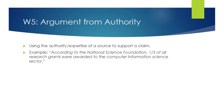W5 is the argument from authority — using authority or expertise to support a claim. For example: 'according to the National Science Foundation, one-third of all research grants were awarded to the computer information science sector.' The grounds is the National Science Foundation; the warrant is that the NSF keeps records on these things. If the NSF is credible and would know such things, this is probably a good argument — a sound use of argument from authority.